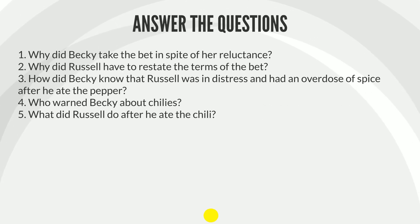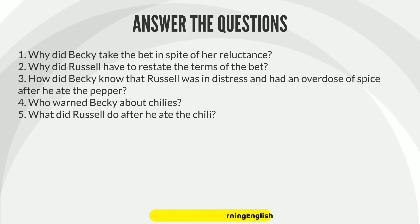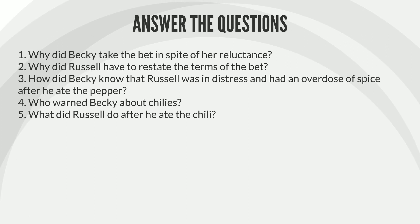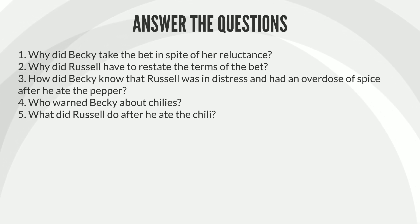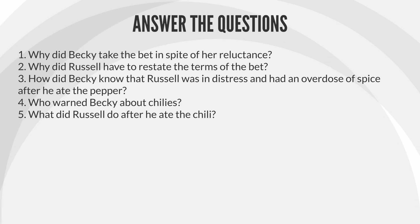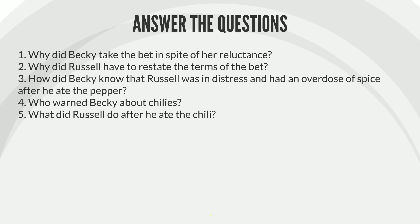1. Why did Becky take the bet in spite of her reluctance? 2. Why did Russell have to restate the terms of the bet? 3. How did Becky know that Russell was in distress and had an overdose of spice after he ate the pepper? 4. Who warned Becky about chilies? 5. What did Russell do after he ate the chili?